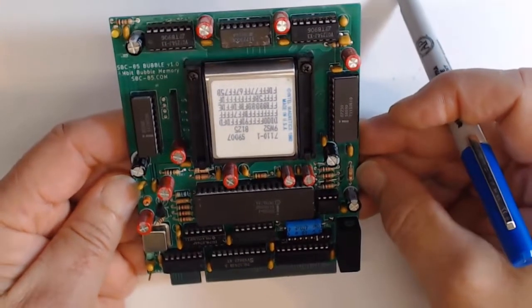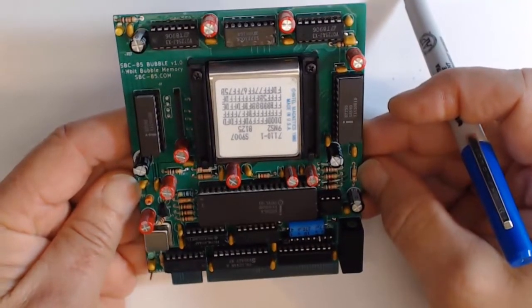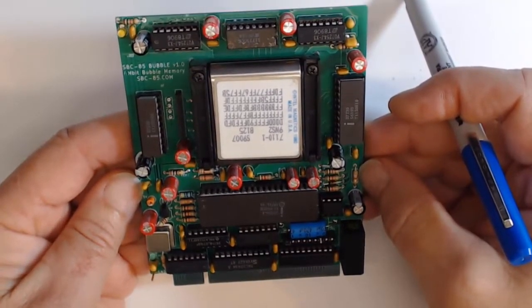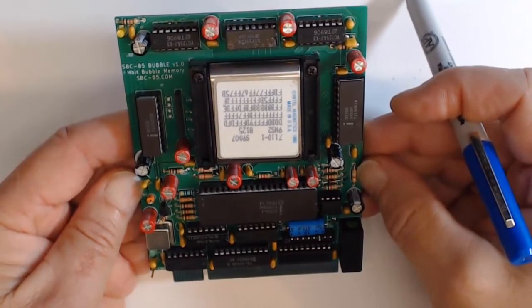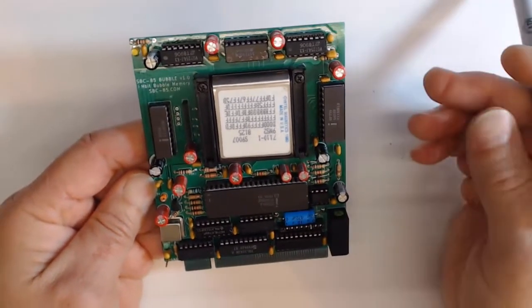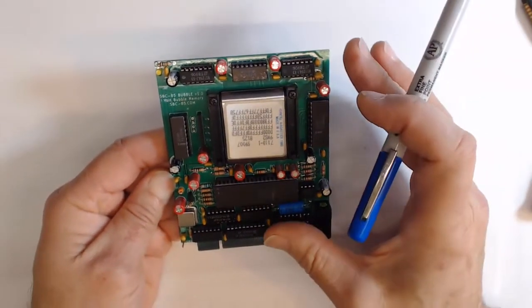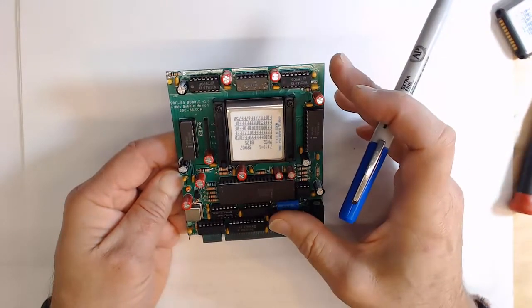This is a very unique device, bubble memory. It's a non-volatile type of storage that came out in the 60s and 70s and really kind of peaked between 1981 and 1986 or so. It's a very interesting technology and amazingly it's something that has been back in the news again.